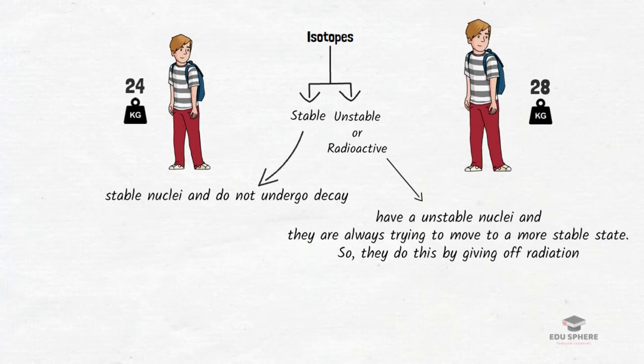This process by which an unstable atomic nucleus loses energy by releasing radiation is called radioactive decay. Remember that radioactivity occurs only when the nucleus contains an excess amount of neutrons. Obviously, when there is excess amount of neutrons, it is unstable and this gives the radioactive nature to the isotope.